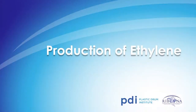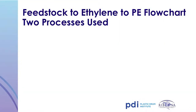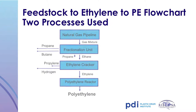How is ethylene produced? There are two main methods. The first uses a natural gas liquids feedstock, primarily used in North America due to the abundant supply of natural gas. Natural gas is fractionated to remove unneeded components such as butane and propane. The ethane portion is subjected to a cracking process which results in ethylene, which is then sent to a polyethylene reactor for polymerization to form the finished product, polyethylene.